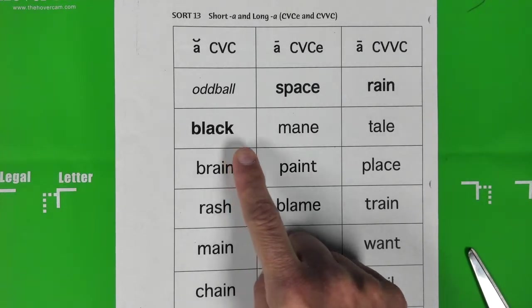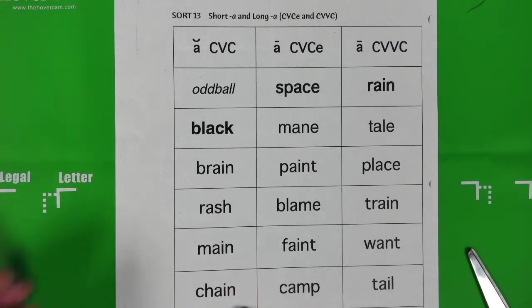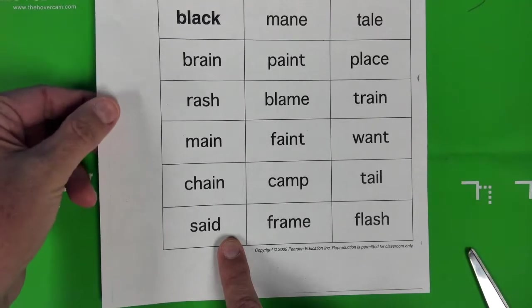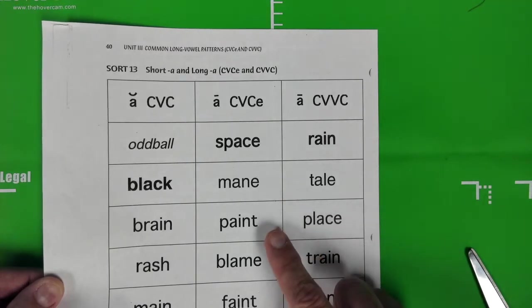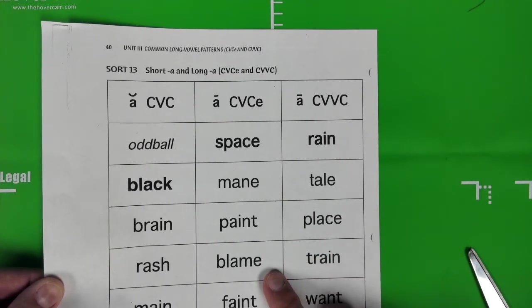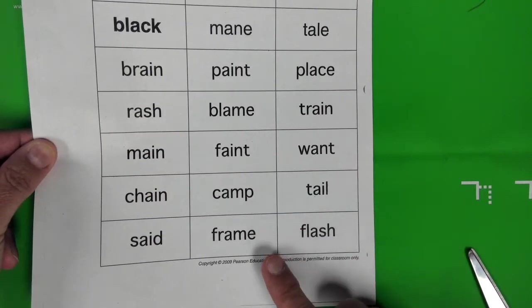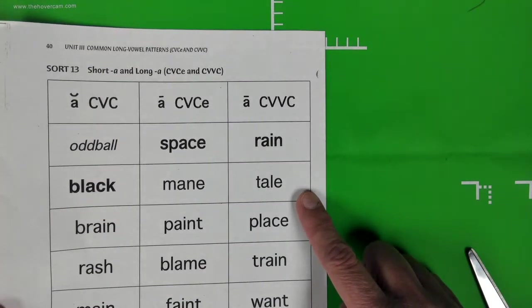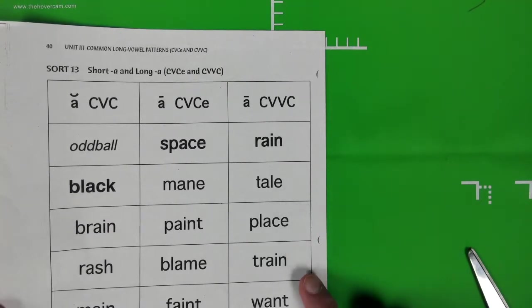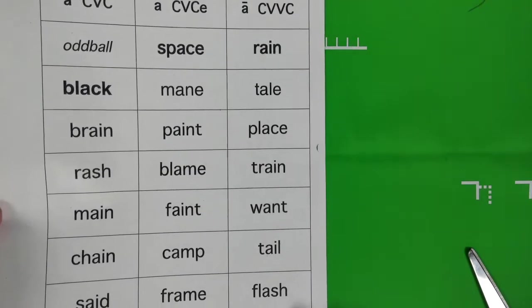Black. Brain. Rash. Main. Chain. Set. Space. Main. Paint. Blame. Faint. Camp. Frame. Rain. Tail. Place. Train. Want. Tail. And Flash.